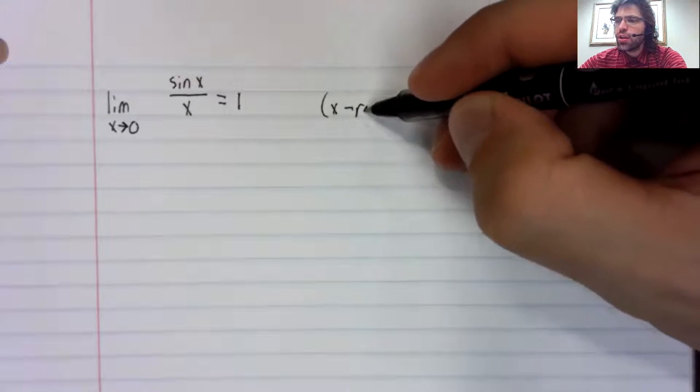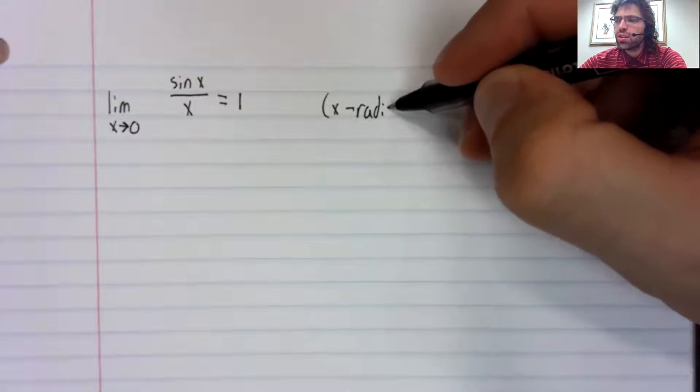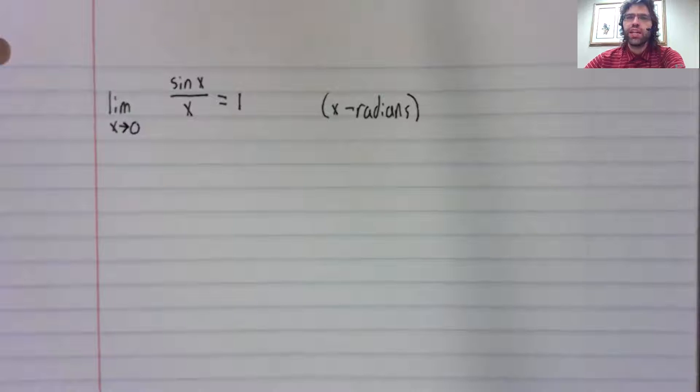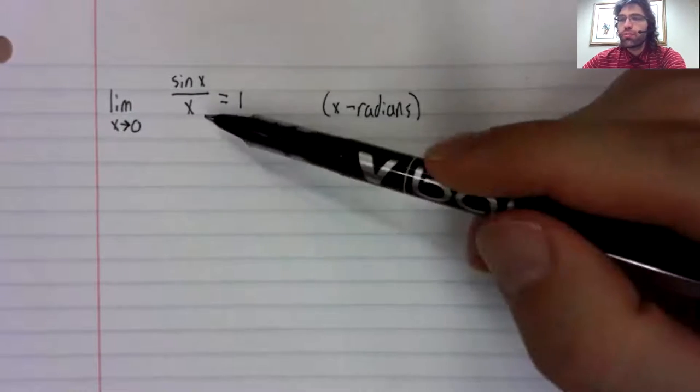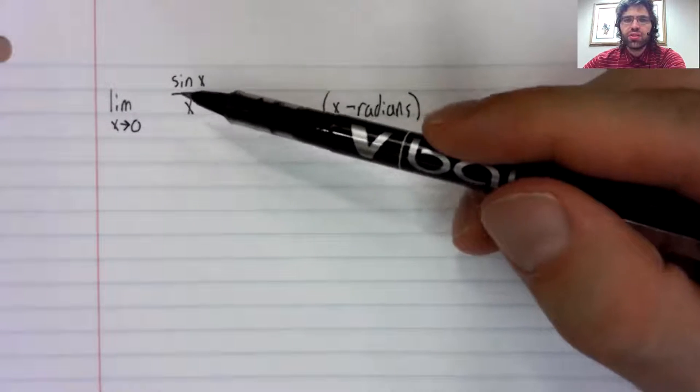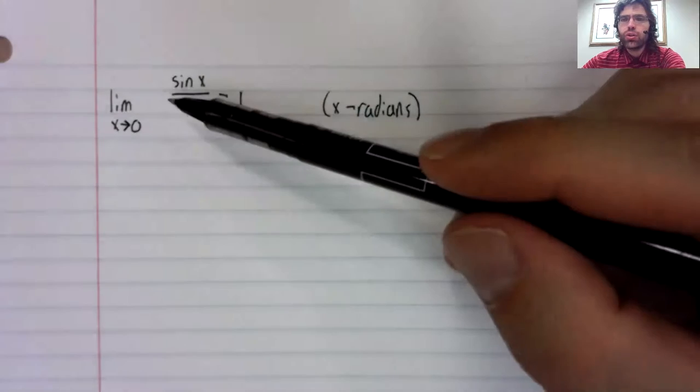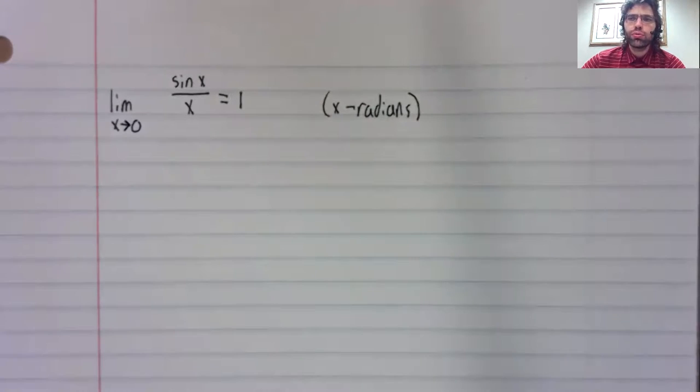And here x needs to be measured in radians. Proving this limit is true is a bit of an exercise. We can't use our quotient rule. If we try to use our quotient rule, we get a division by zero error. I'm not going to give the formal proof as I mentioned.